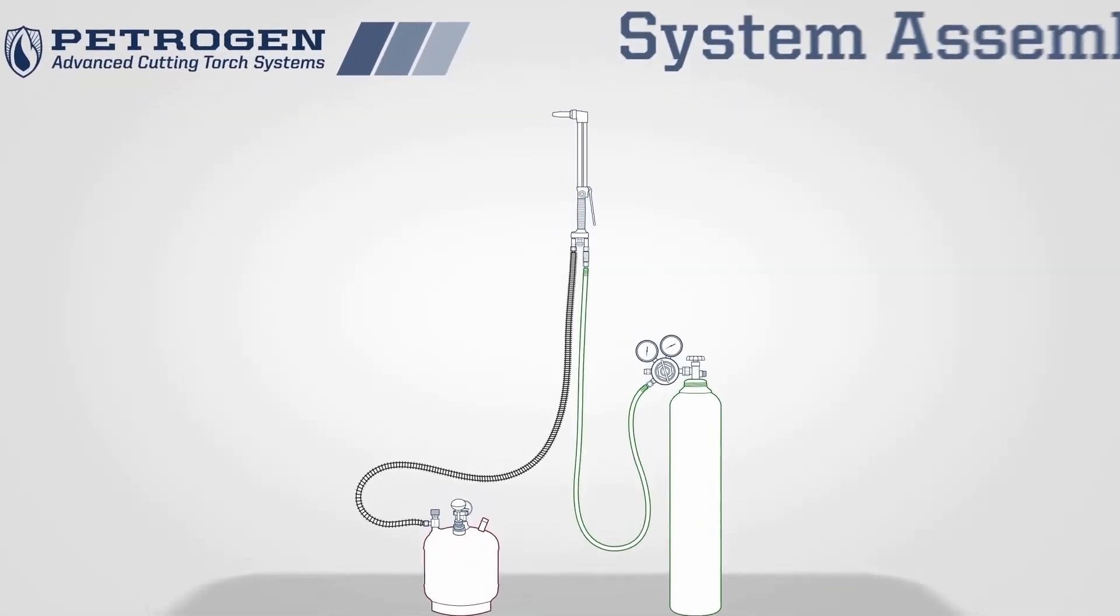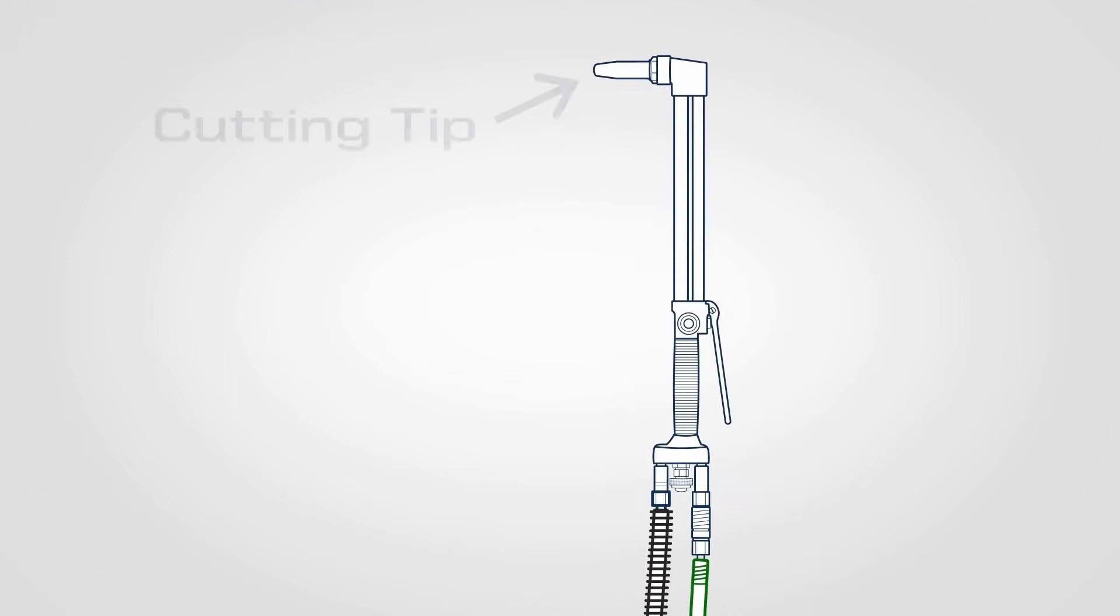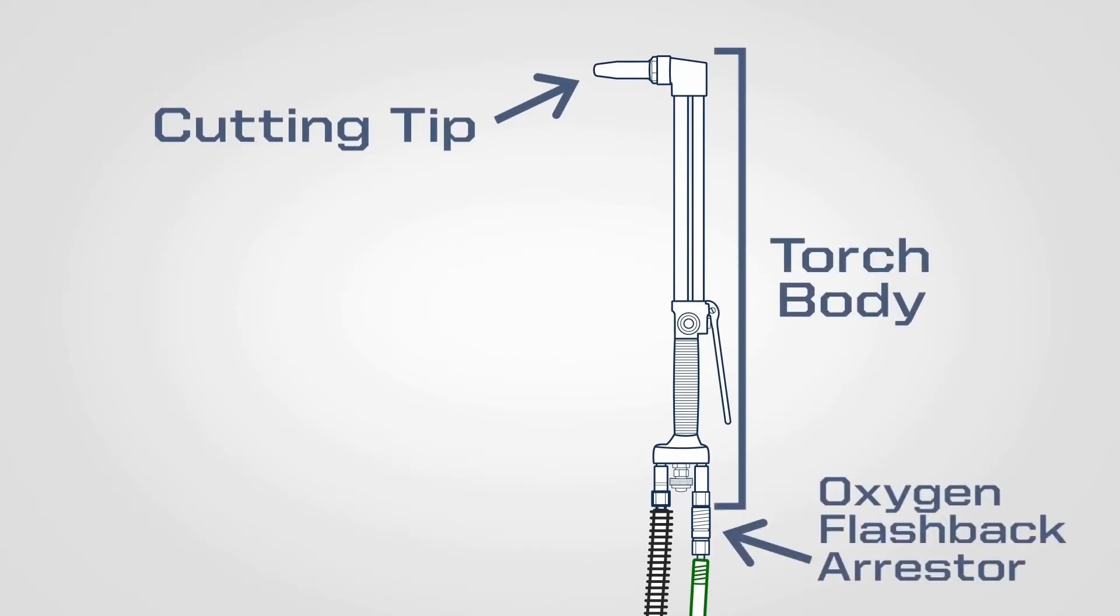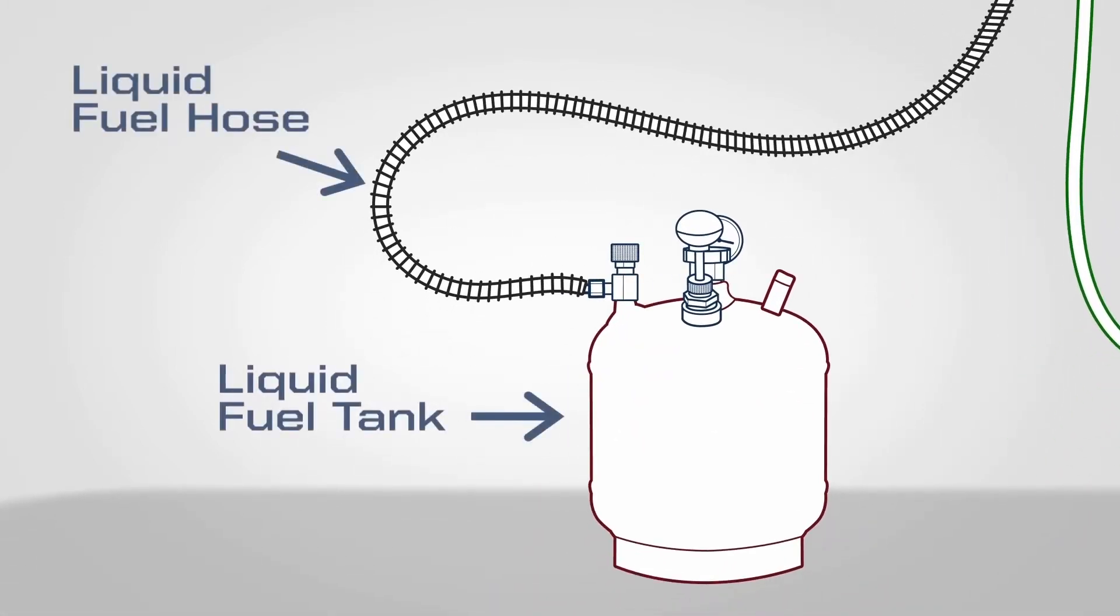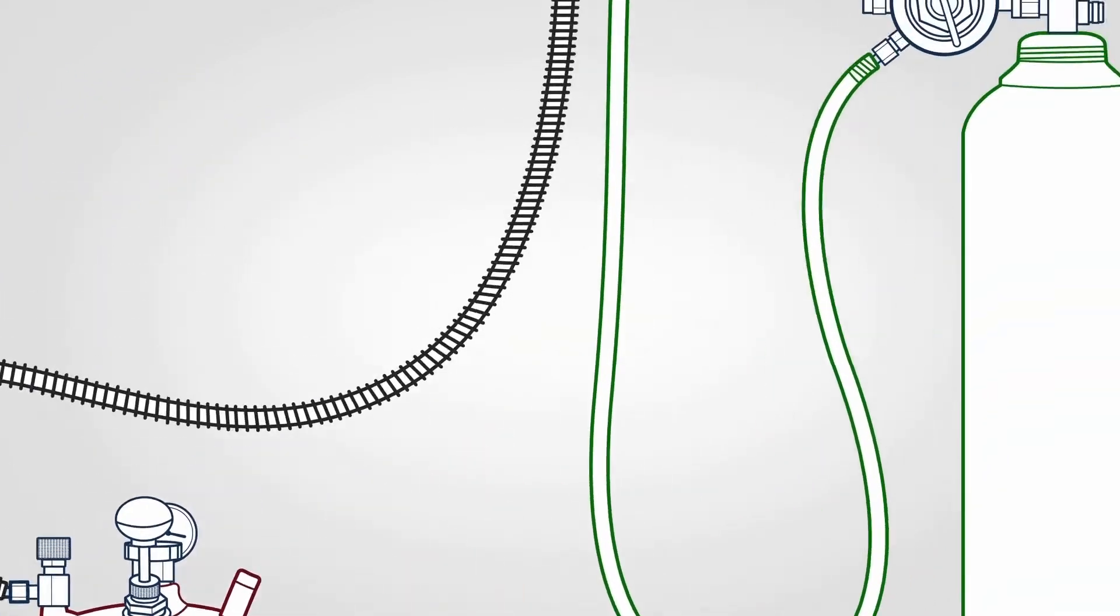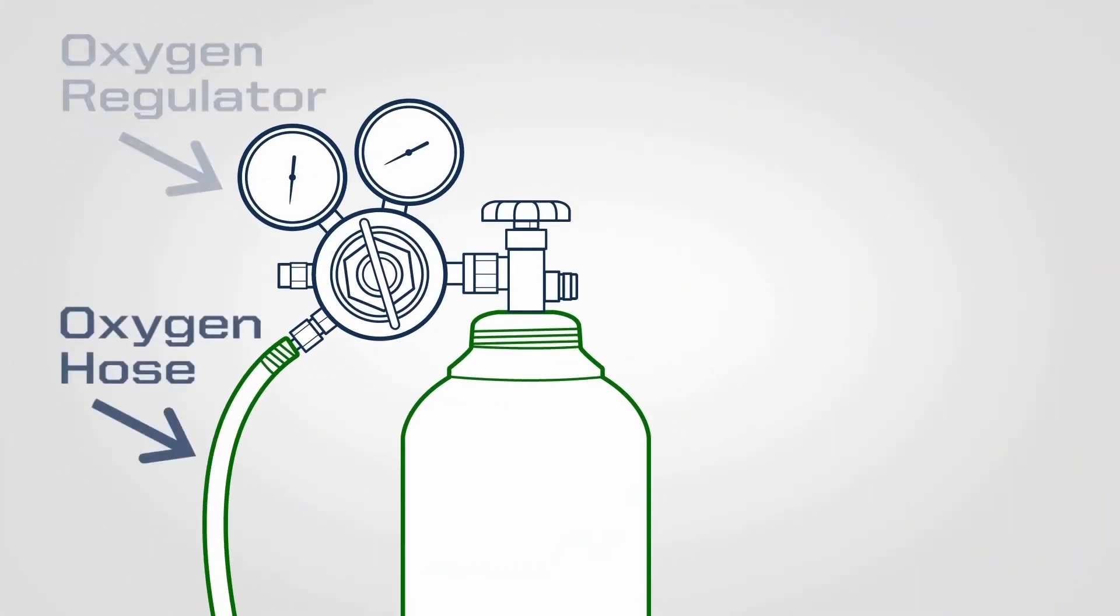Petrogen Cutting Torch Systems are comprised of the same basic components: the cutting tip, torch body, oxygen flashback arrester, liquid fuel hose, liquid fuel tank, oxygen hose, oxygen regulator, and oxygen bottle.